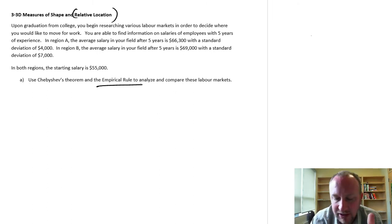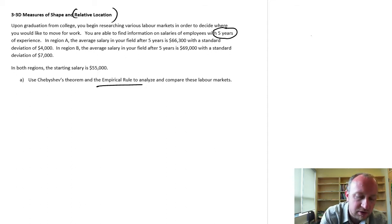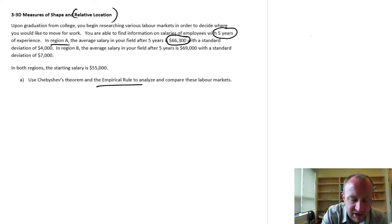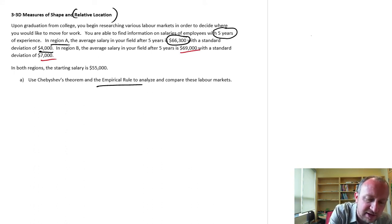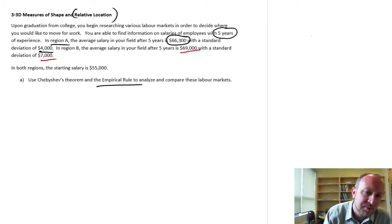You graduate from college, you're looking at where do you want to go to work. You have information on salaries of employees with five years of experience. In region A, after five years, the average salary is sixty six thousand three hundred, with a standard deviation of four thousand. In region B, the average is sixty nine thousand dollars, with a standard deviation of seven thousand. Both regions have a starting salary of fifty five thousand dollars.